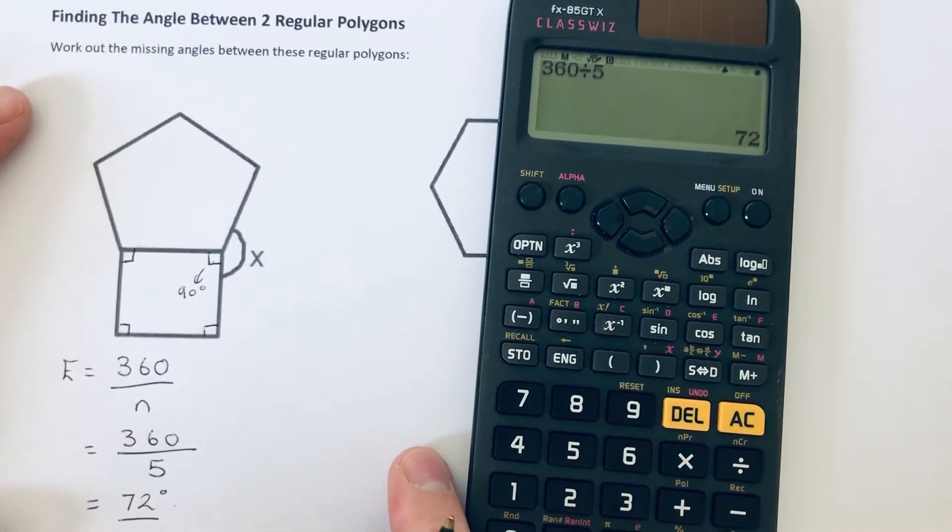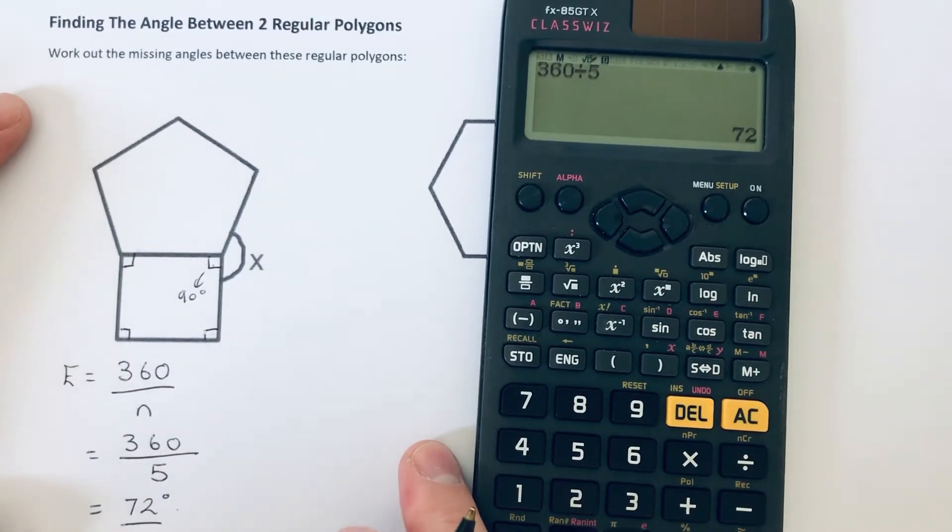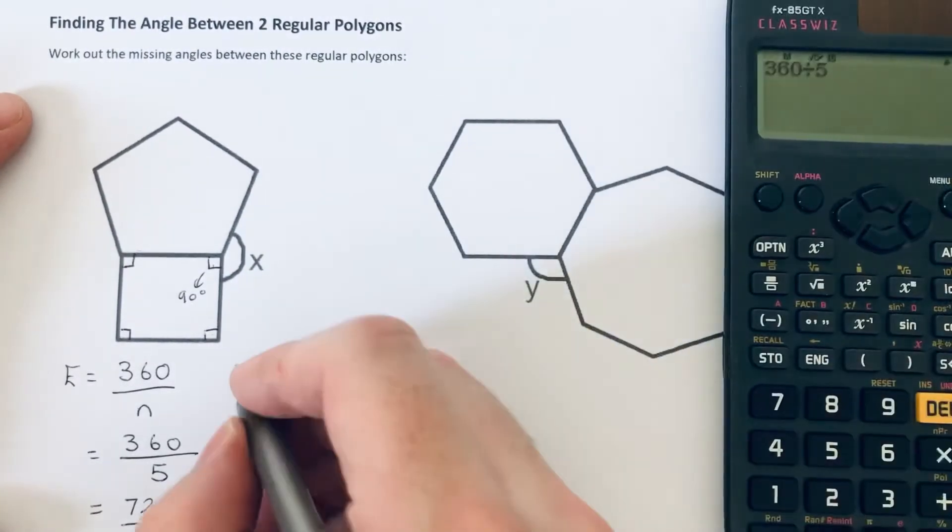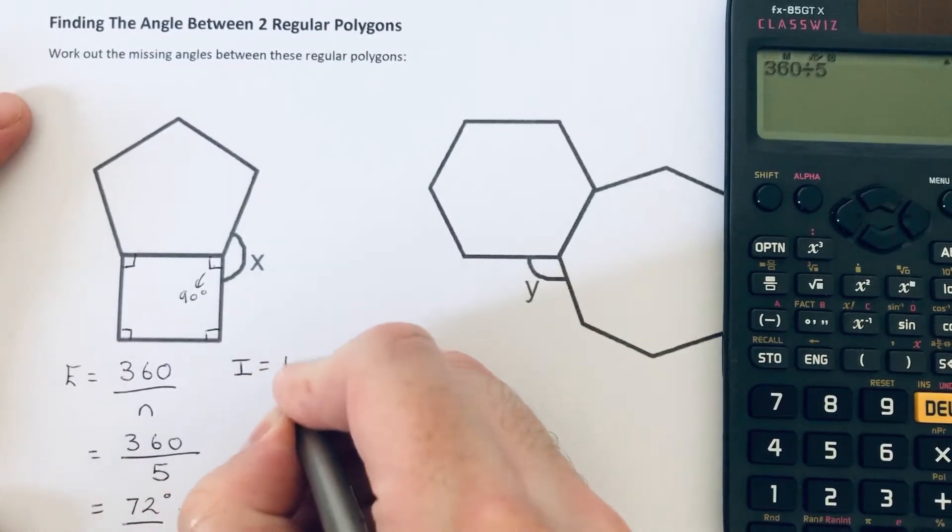Okay, so we're more interested in the interior angle, so we now need to work out the interior by taking the exterior angle away from 180.